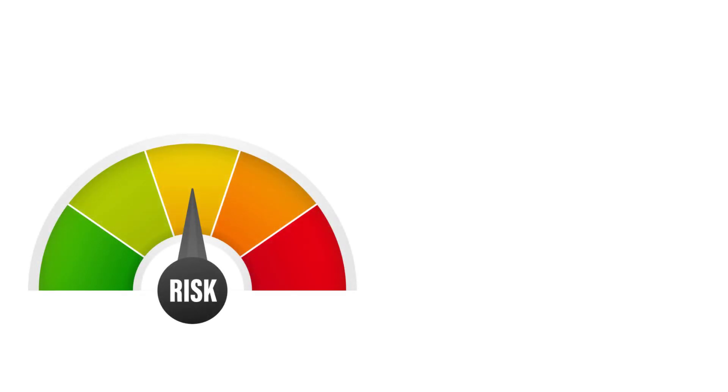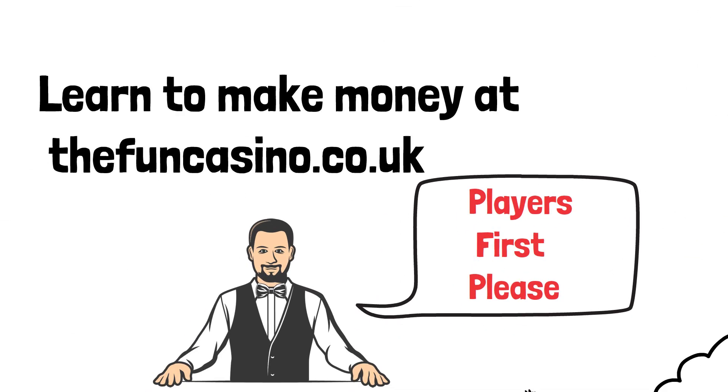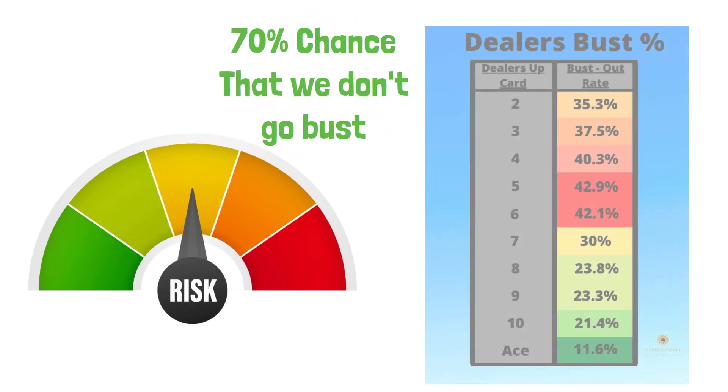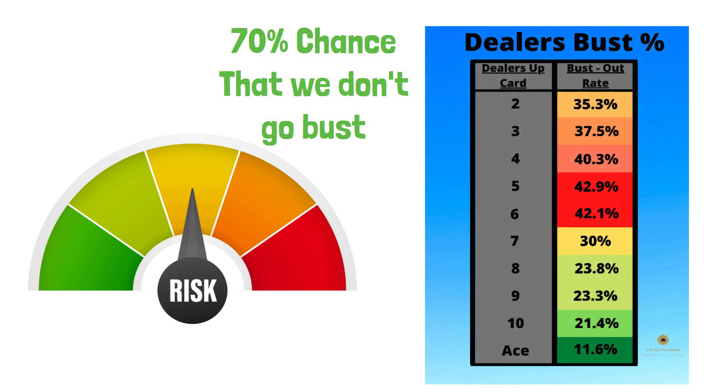There's a 70% probability that we won't go bust, but are we playing into the casino's house edge by taking that chance? To answer this question let's consider the probability that the dealer will go bust. Looking at the dealer bust rate chart, we can see the probability the dealer will go bust is a massive 42.1%.